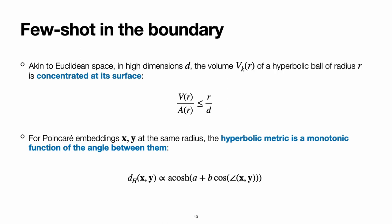Just as we have the curse of dimensionality in Euclidean space, in hyperbolic space something similar happens. That is to say that if we compute the ratio of the volume over the area of a hyperbolic ball in high dimensions d, this ratio will tend to zero as d grows. So, the volume of a ball will be roughly concentrated close to its surface.